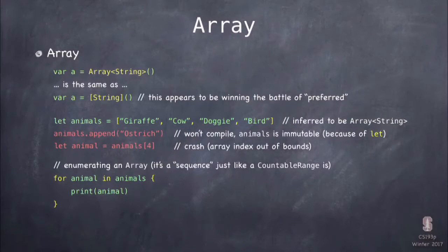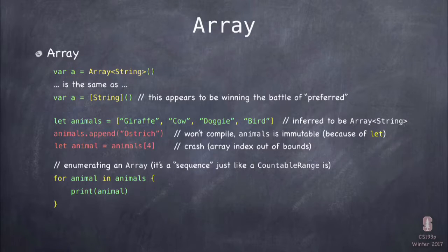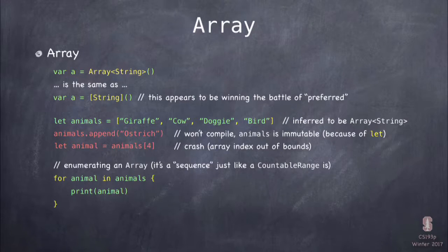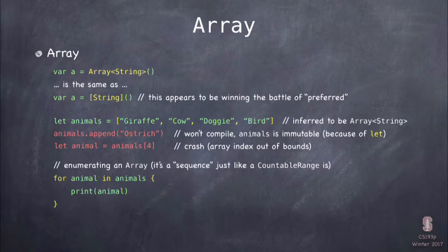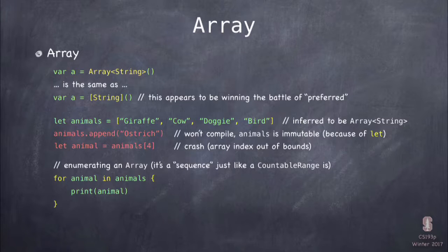Array is a collection, and collections are sequences, so you can for-in over them. 'for animal in animals' executes the loop body four times — once each for giraffe, cow, doggy, and bird. Remember, for-in is the only for loop in Swift.